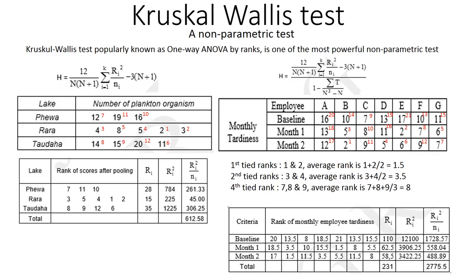Each item in the given data is ranked. Now we compute Ri for each row (month): we got 110, 62.5, and 58.5. Then Ri² gives 12100, 3906.25, and 3422.25. Finally, computing Ri²/ni — for row one with 7 items: 12100/7. We compute all values similarly and find the total summation of Ri²/ni. This value is then substituted into the modified equation to find H.